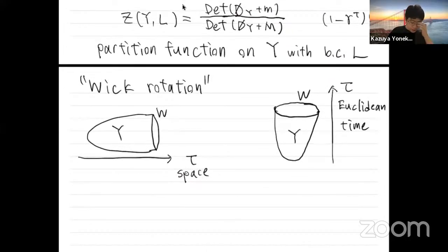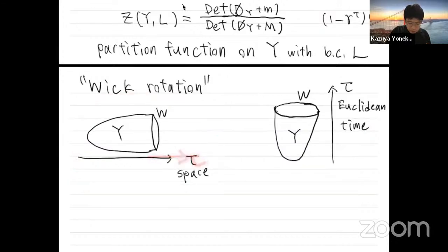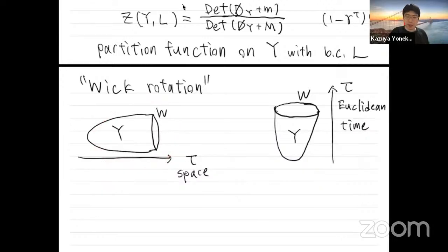Now to compute this quantity, it's convenient to change our point of view. So far we have looked at the system where the tau direction is a space direction and this boundary is a spatial boundary. But we are working in Euclidean signature space, so there's no distinction between time and space. We can regard any direction as a time direction.